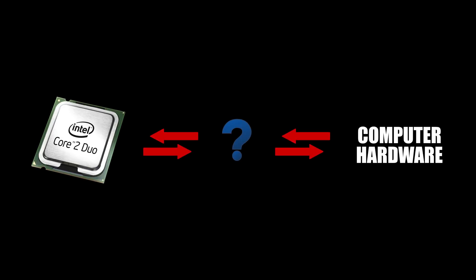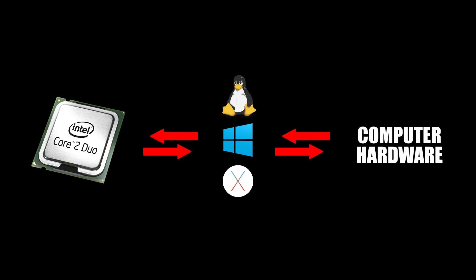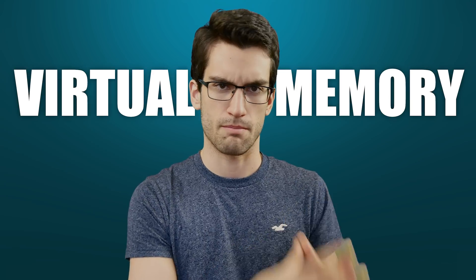The first thing you need to know is that every modern CPU needs a modern operating system — Windows, Linux, macOS, it doesn't really matter — but it needs something by which to communicate with and manage onboard hardware. All of these operating systems rely on something called virtual memory.